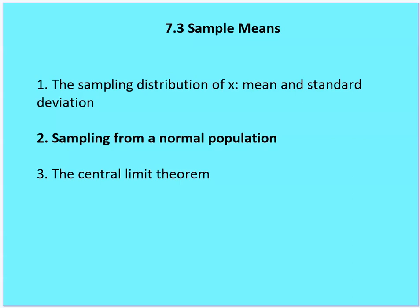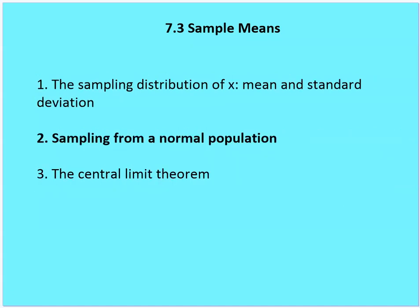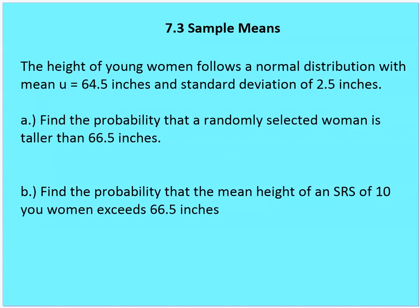The second thing we want to talk about is sampling from a normal population. If a population is normally distributed with a mean and a standard deviation, then the sampling distribution of X-bar has a normal distribution with that same population mean and the standard deviation we've defined, provided the 10% condition is met. For example: the height of young women follows a normal distribution with a mean of 64.5 inches and a standard deviation of 2.5 inches. Find the probability that a randomly selected woman is taller than 66.5 inches.